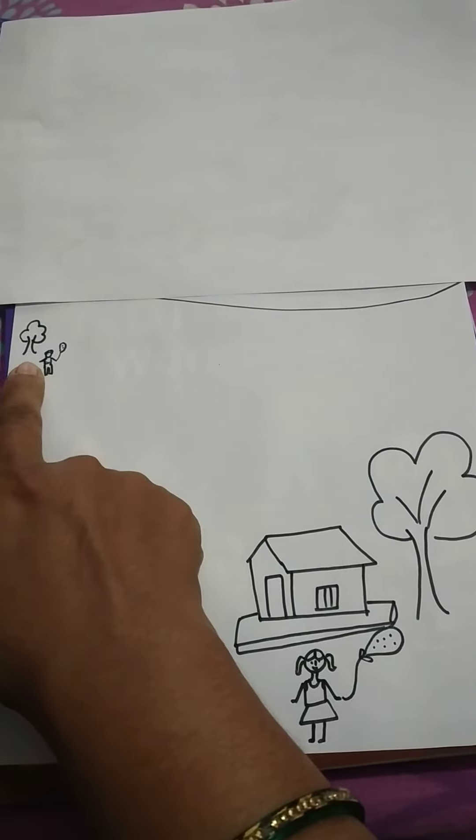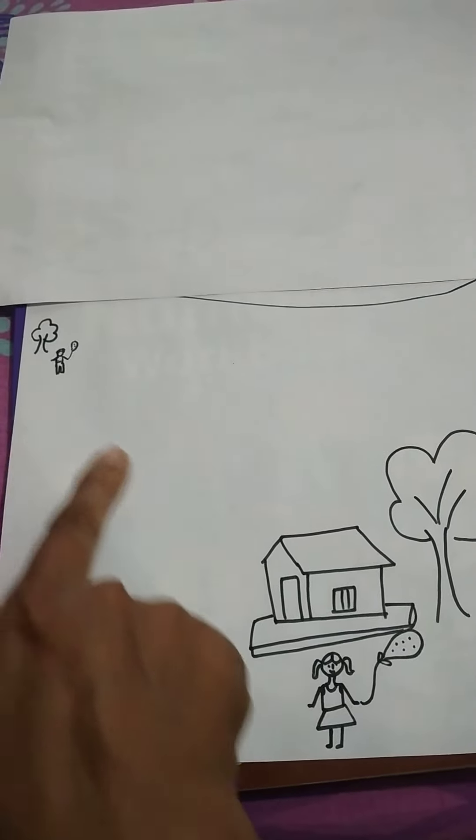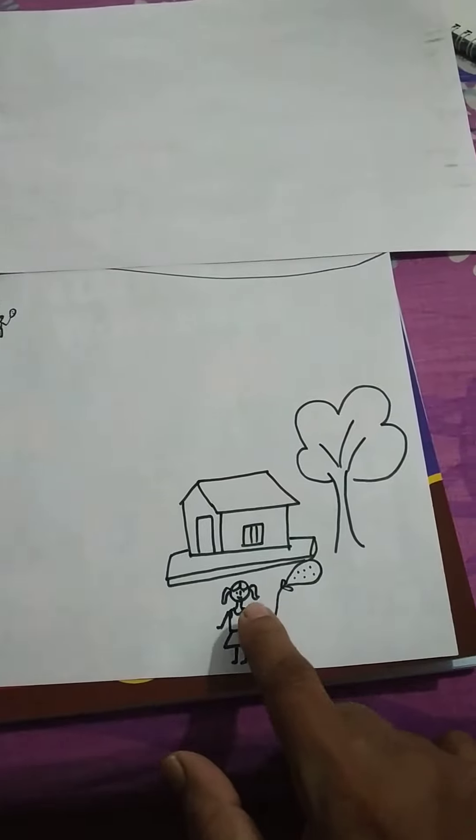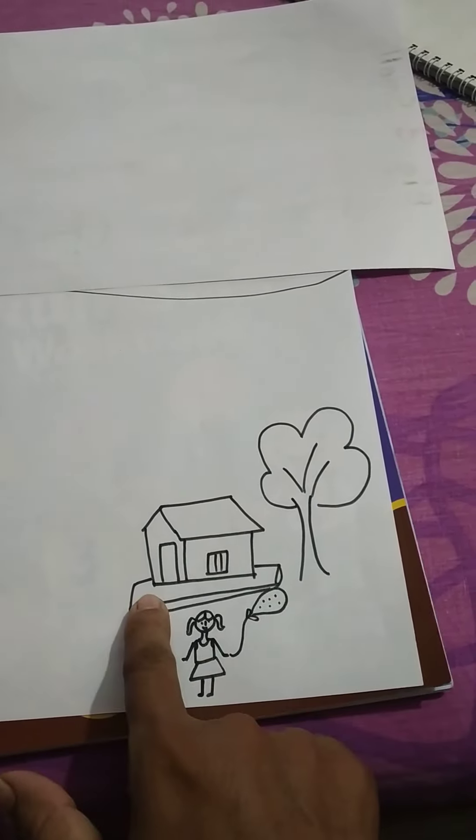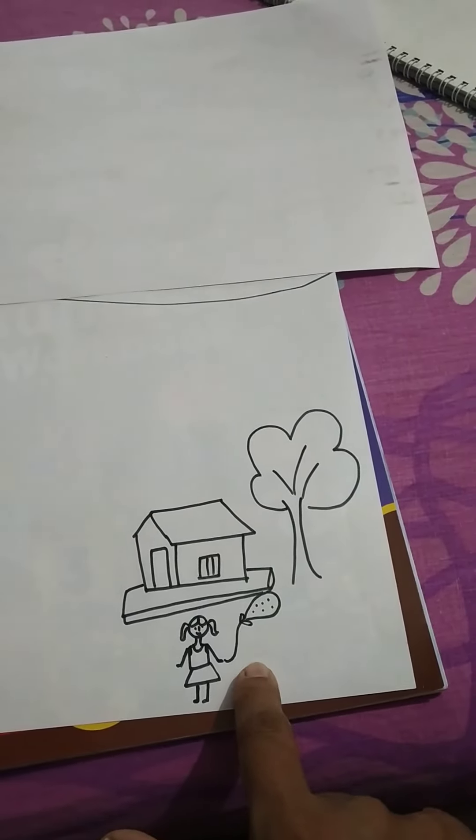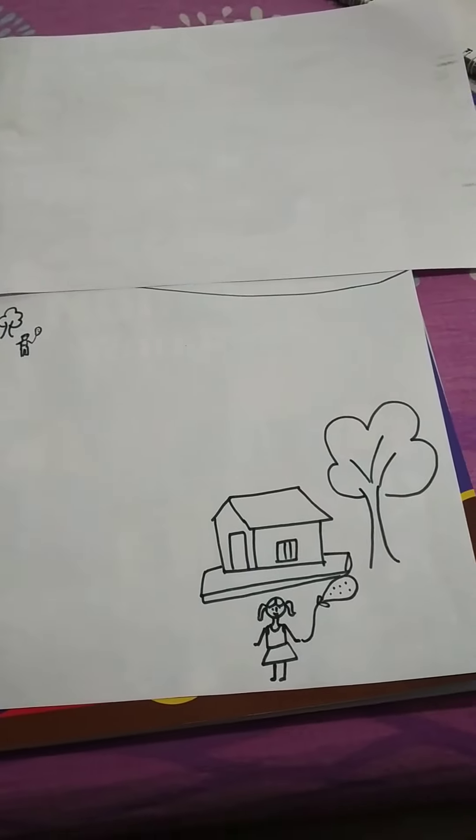And she is also near as well. Because the girl near the house and the tree close to the house. So we are using the word near and far from the house. Thank you.